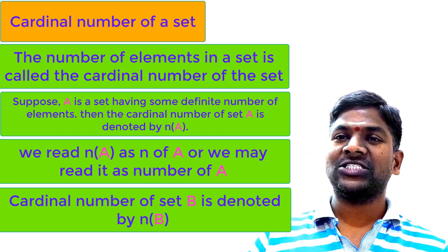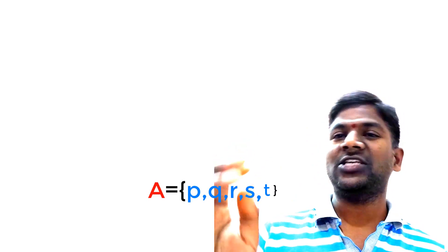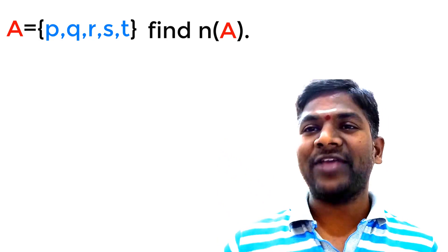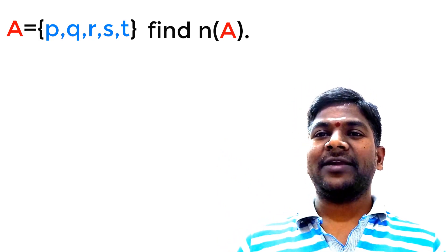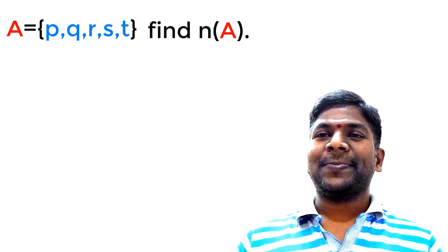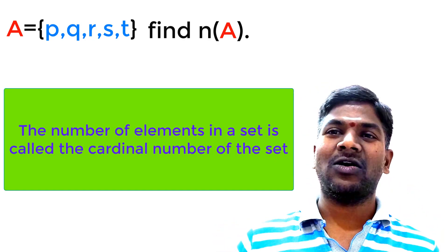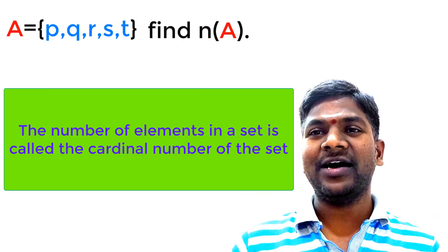Let us take a set. The name of the set is A. The elements of set A are P, Q, R, S, T. These are the elements of set A. What is the cardinal number of set A, or what is N of A? This is the question. As already discussed, the cardinal number of a set means the number of elements in the set.